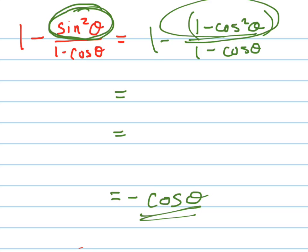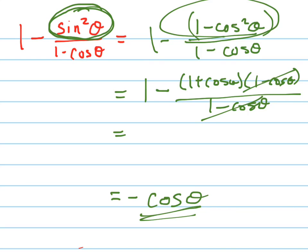And now I can factor it into 1 plus cosine times 1 minus cosine theta over 1 minus cosine theta. And these things cancel out. Yeah. Which means I get 1 minus 1 plus cosine theta.